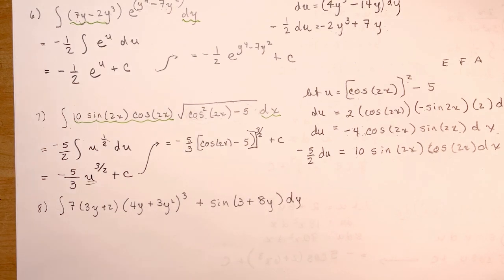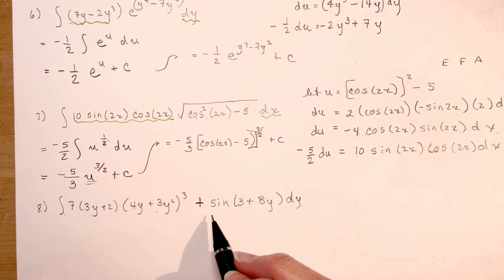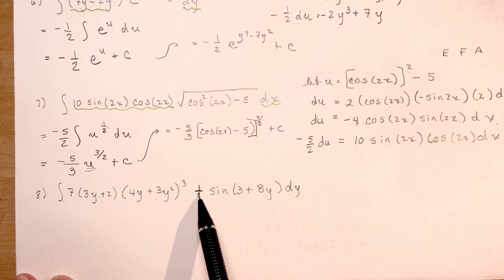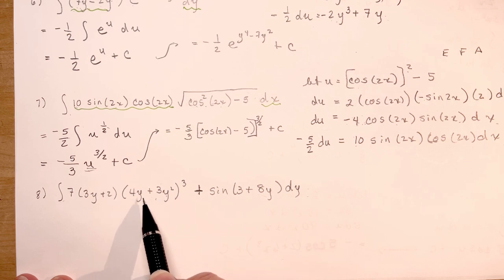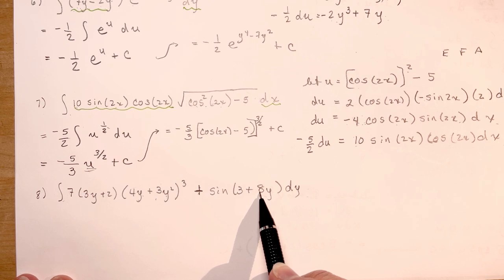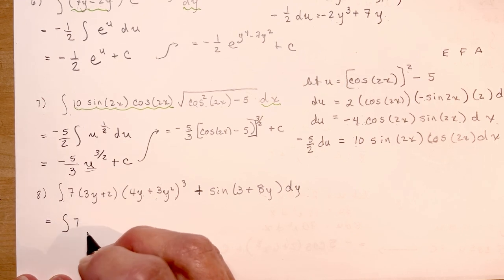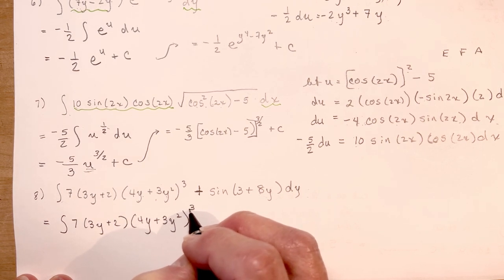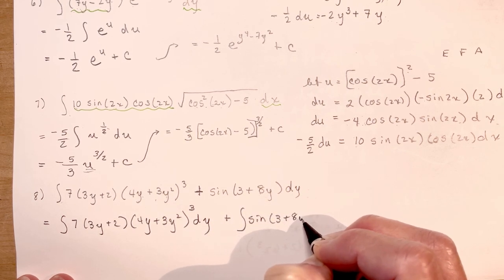Here's the last one, and it looks like the most complicated. If you look, we have a plus sign in the middle — and because there's a plus here, this is called time for a breakup. You can break this into two separate integrals. So I'm going to rewrite it as: the integral of 7 times 3y plus 2 times the quantity 4y plus 3y squared, cubed dy — plus the integral of sine of 3 plus 8y dy. That makes life a lot easier.